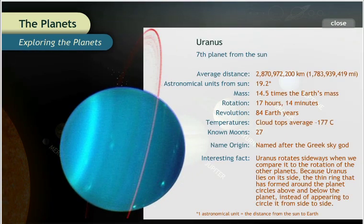Uranus is the seventh planet from the Sun. Like the other gas giants, Uranus is much larger than the inner planets and its mass is 14.5 times the mass of Earth.